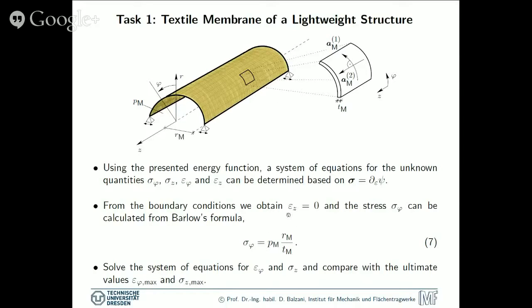So what you should do here, once you know epsilon z and sigma phi, you can solve the system of equations for epsilon phi and sigma z, because these two equations only depend on two unknowns. And then you are asked to compare this with the ultimate values, epsilon phi max and sigma z max, to check if this construction would be basically okay or not. Maybe I should also mention in the full task description, you find further small parts of the tasks and further details. So please take a careful look at those descriptions.